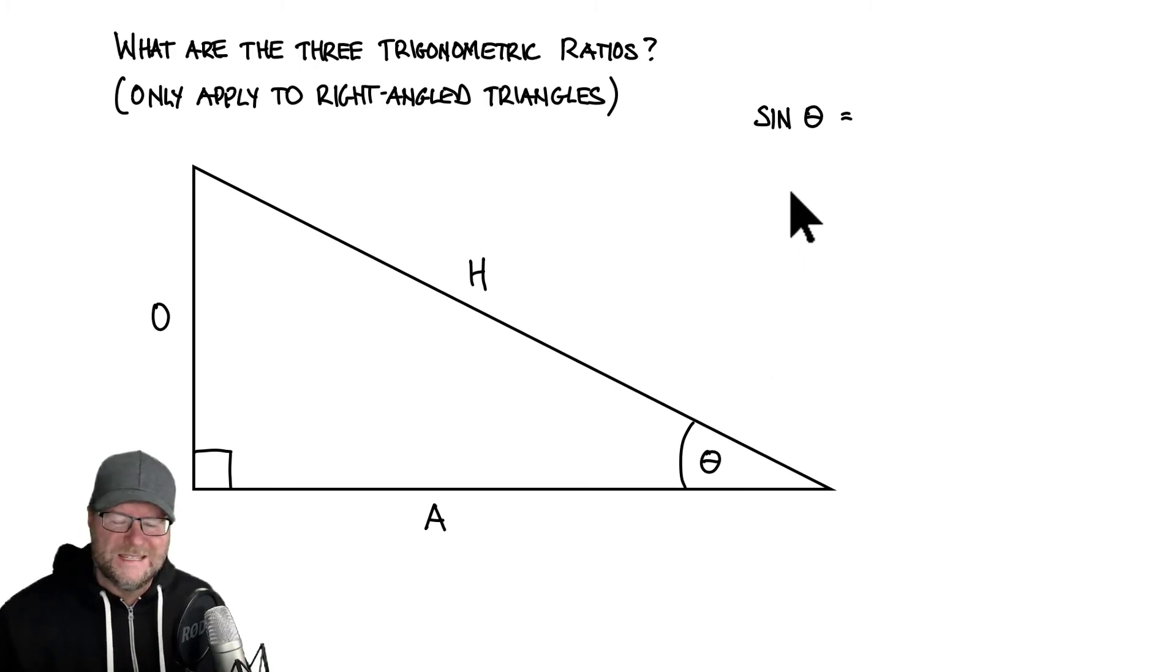The first one it's written sin, but we pronounce it sine. Sine of our angle theta, because we include the angle here. So the sine of theta equals the opposite over the hypotenuse.